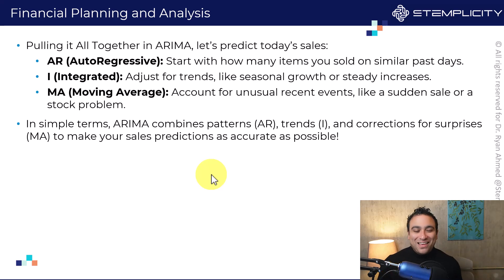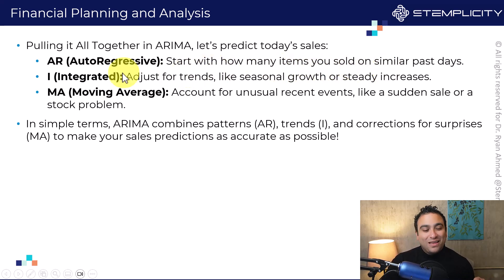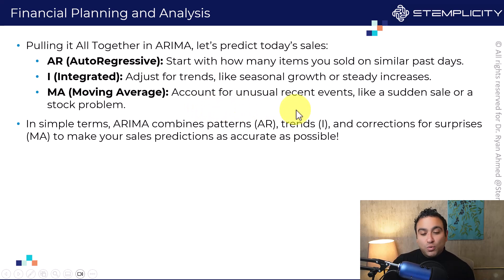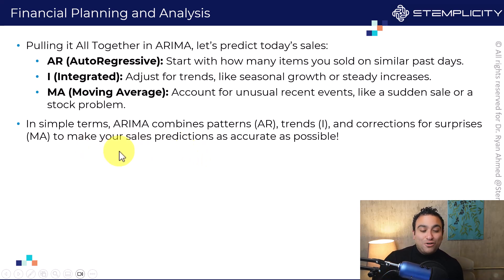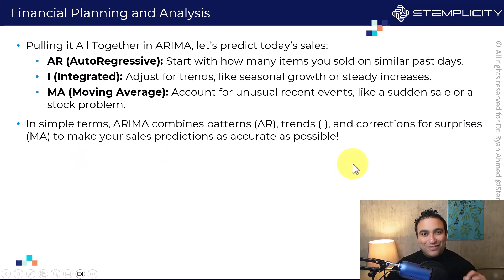Let's summarize. The idea of ARIMA is to predict today's sales as follows: I'm going to add the autoregressive piece — how many items you sold on similar past days. I'm going to add the integrated part — adjusting for trends like seasonal growth or steady increases. Then I'm going to add the moving average piece — accounting for unusual recent events like a sudden sale or a stock problem. ARIMA combines pattern (AR), trend (I), and corrections or surprises from the past to make the prediction as accurate as possible.